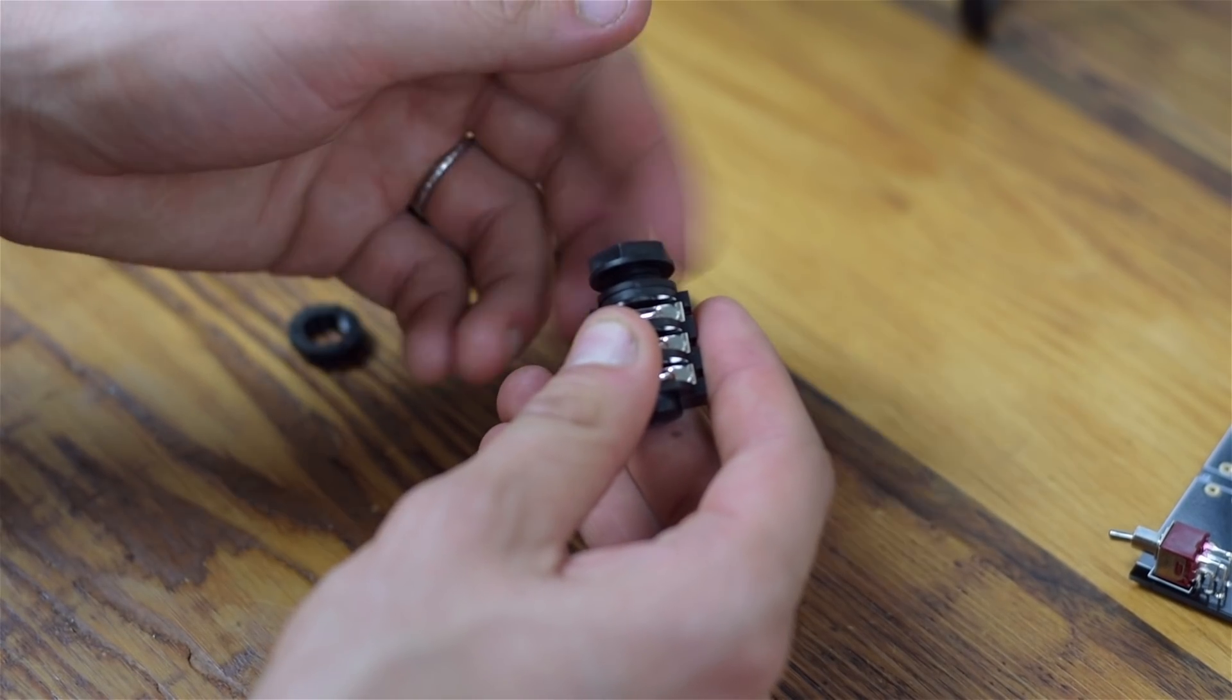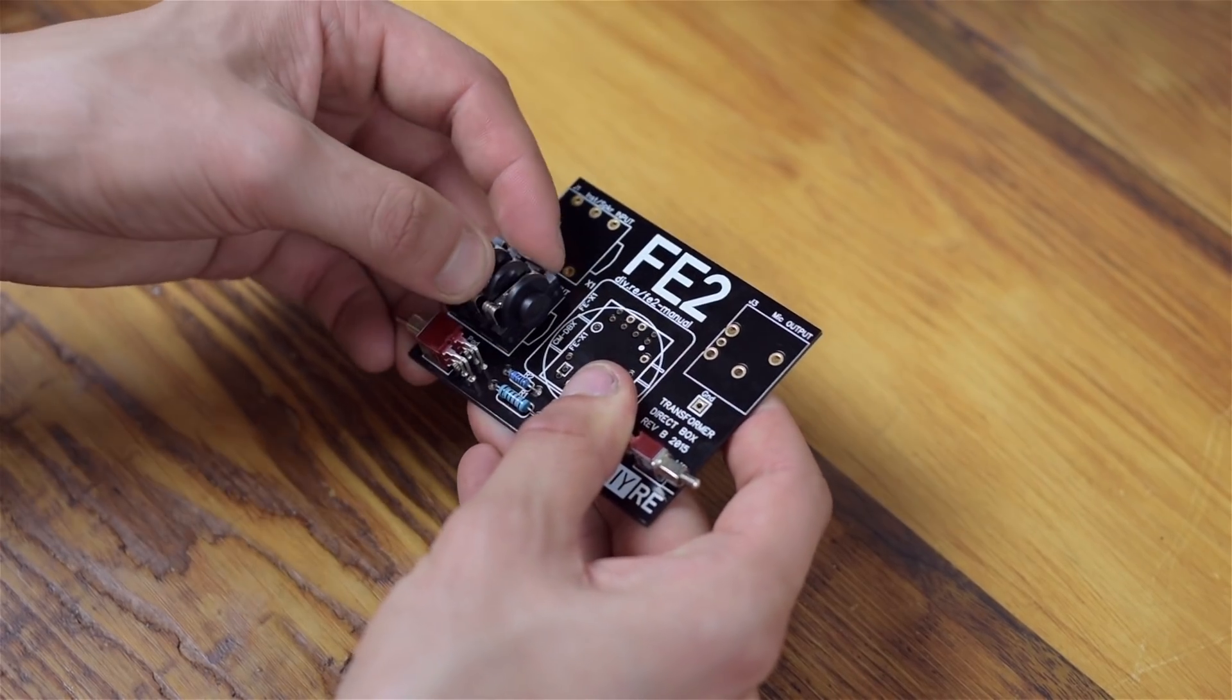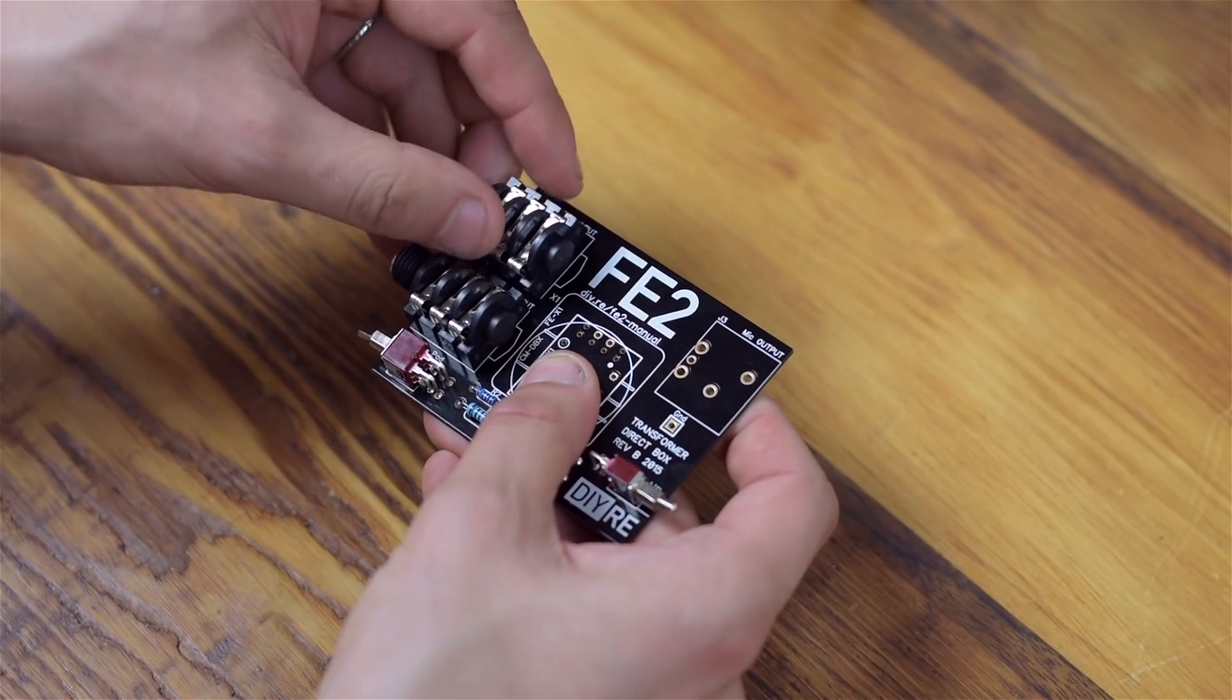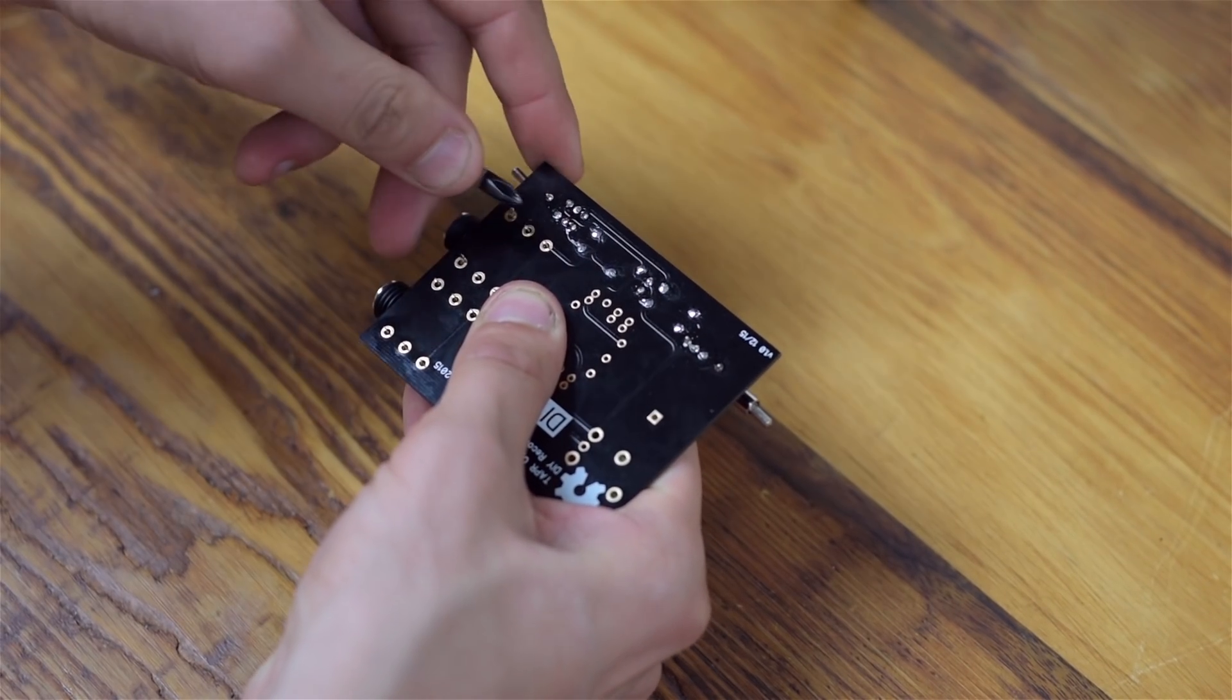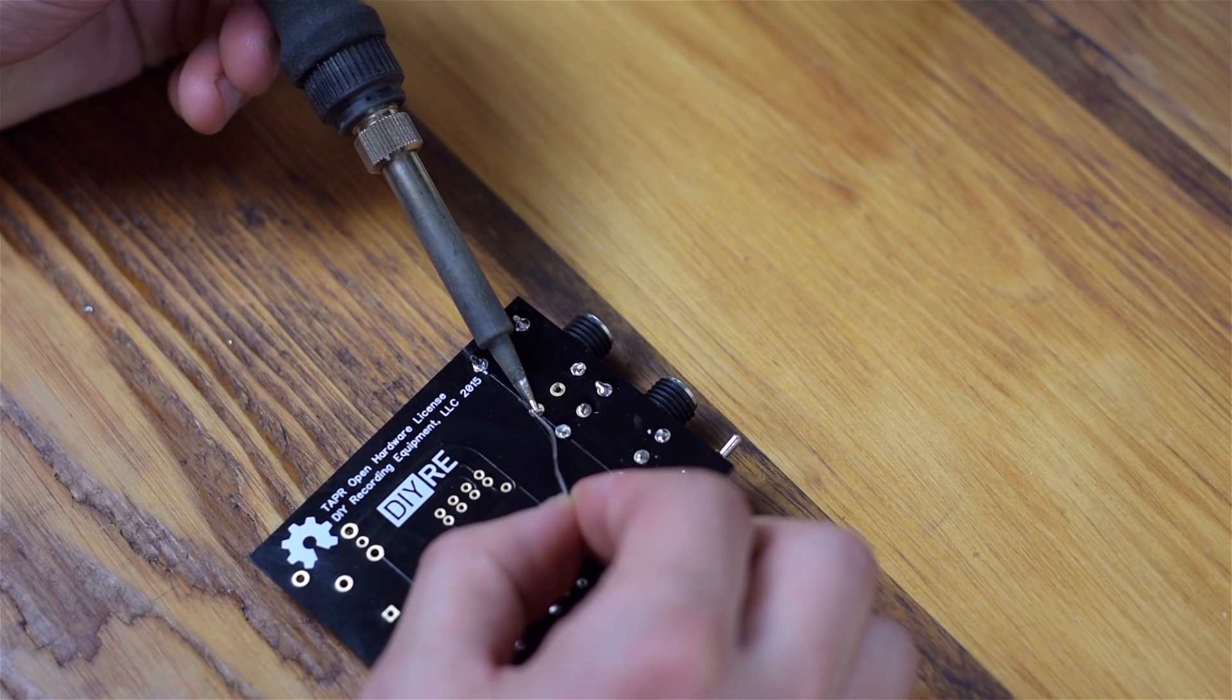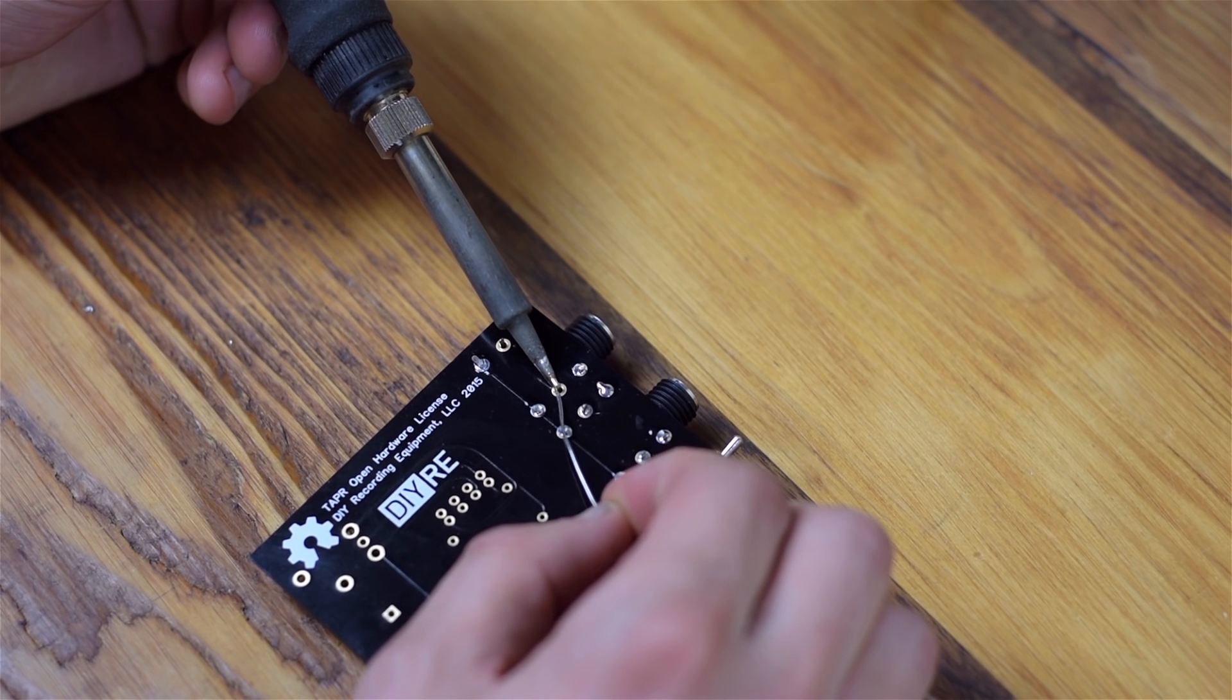Next come the input jacks. First remove their nuts and washers. Place them in the two positions marked J1 and J2. Then flip the board over, and using the head of your screwdriver, bend a few of the leads against the circuit board. Now solder these in place and let the joints cool. There's no need to clip the excess leads here.